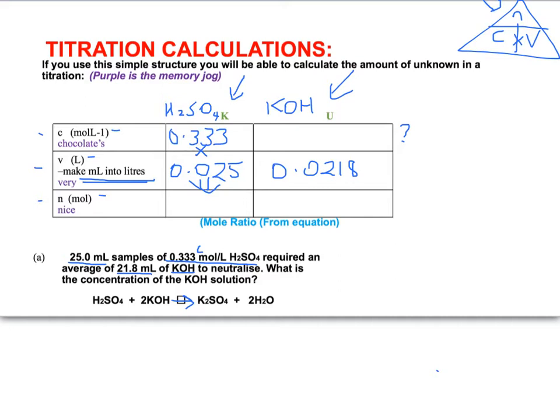So we just go this column times this column gives us our number of moles, which is 0.00833. Three significant figures. Or you could say that that was 8.33 times 10 to the power of minus 3. That's called standard form. And your calculator will probably give you your numbers in standard form.